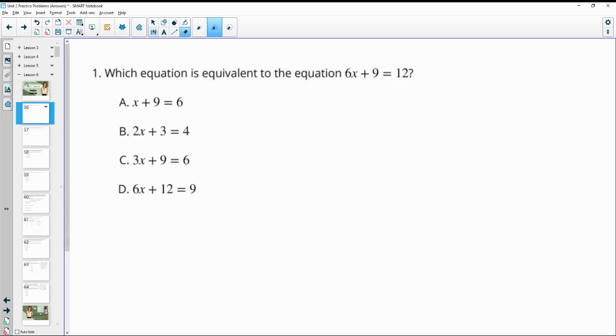Number one asks us to find an equation that's equivalent to the equation 6x plus 9 equals 12. So remember you can perform operations to this equation as long as you do it to both sides of the equal sign.